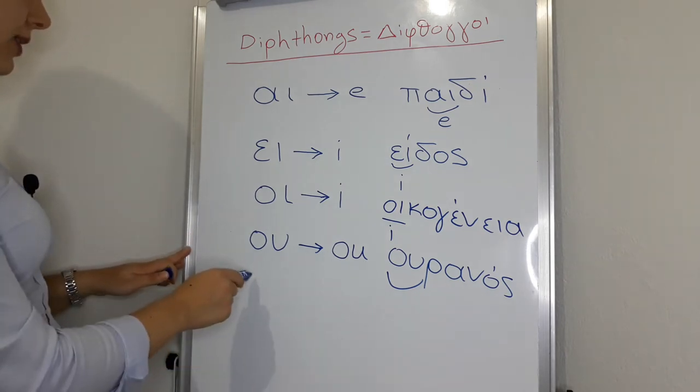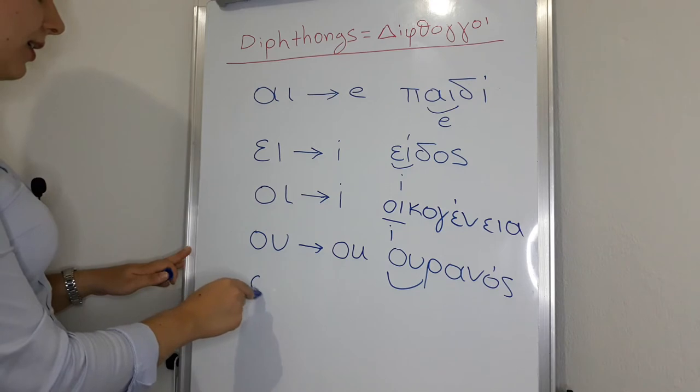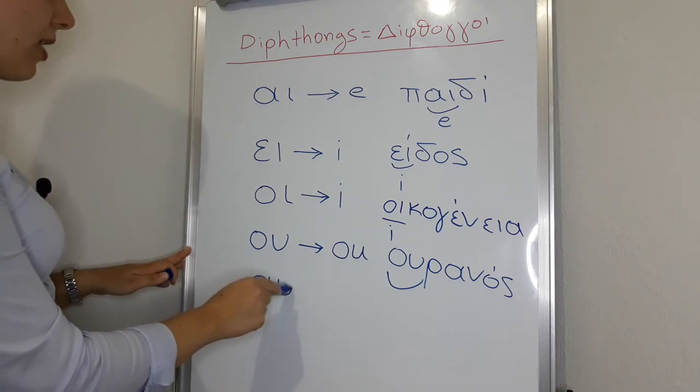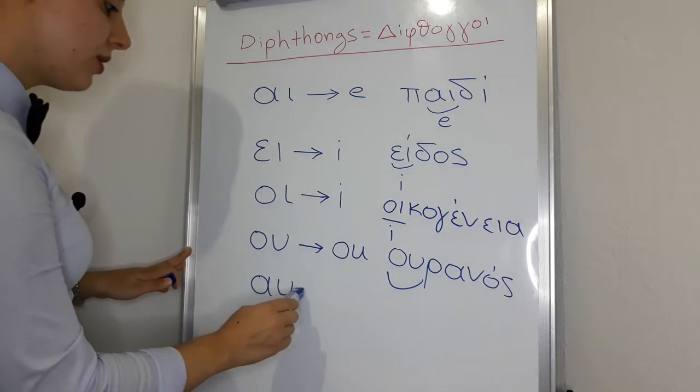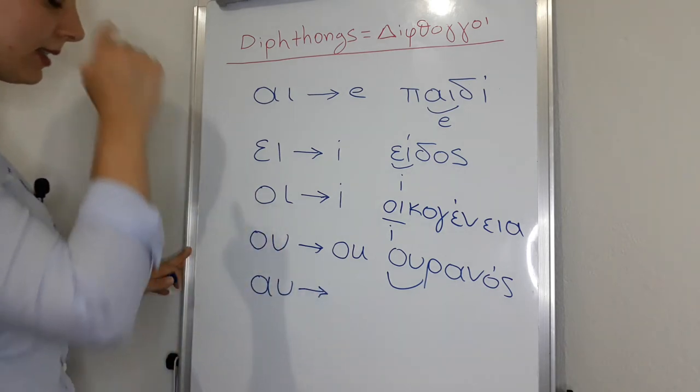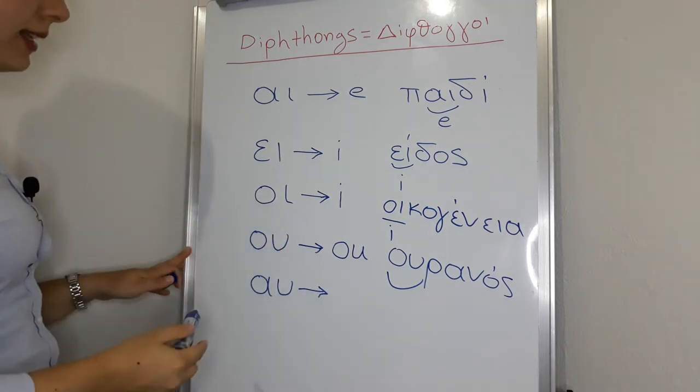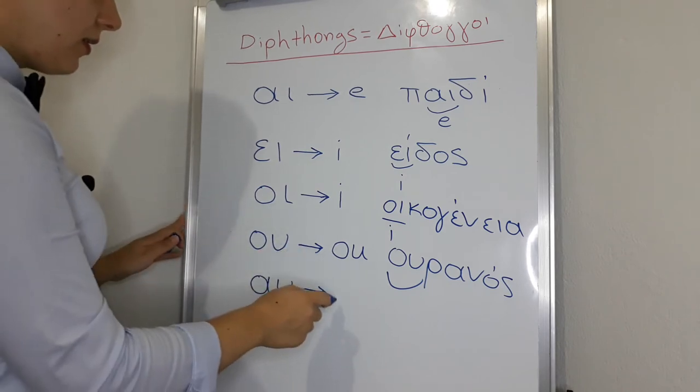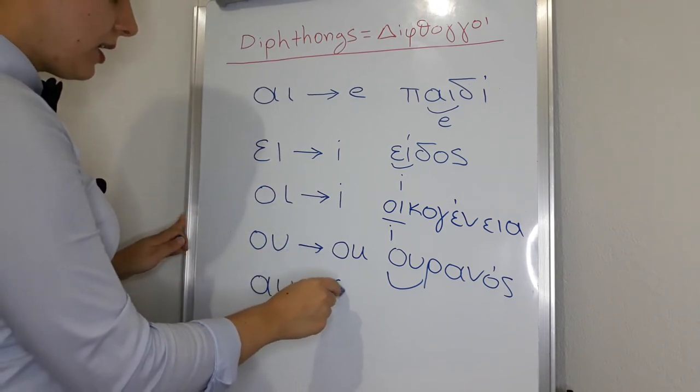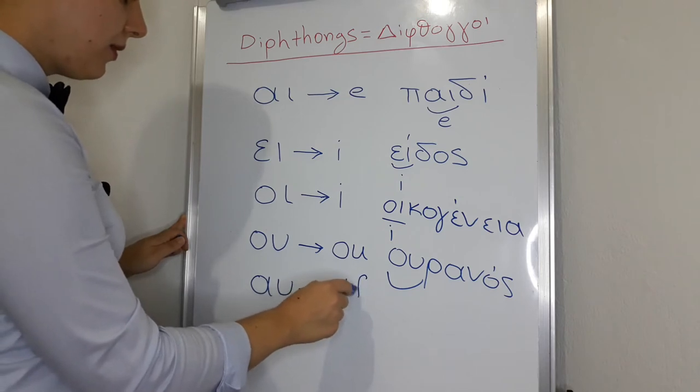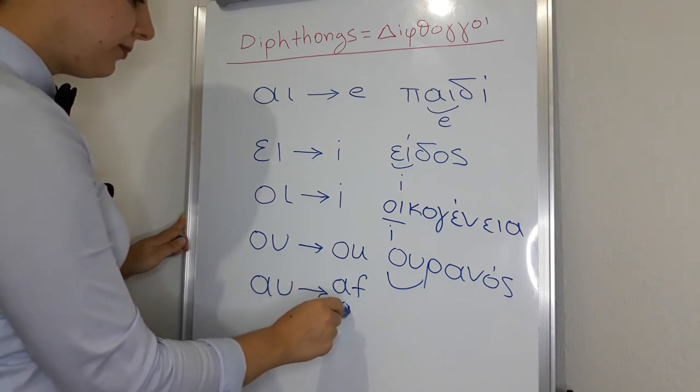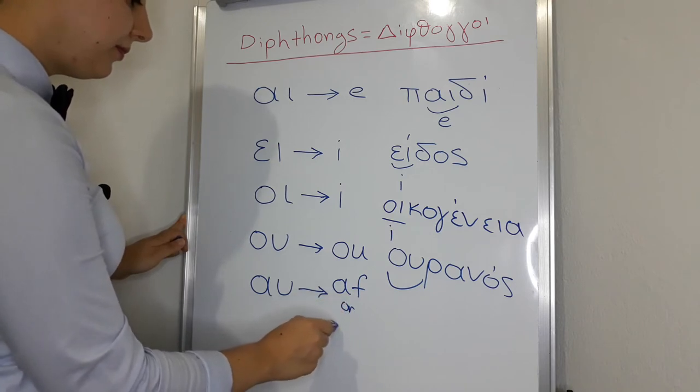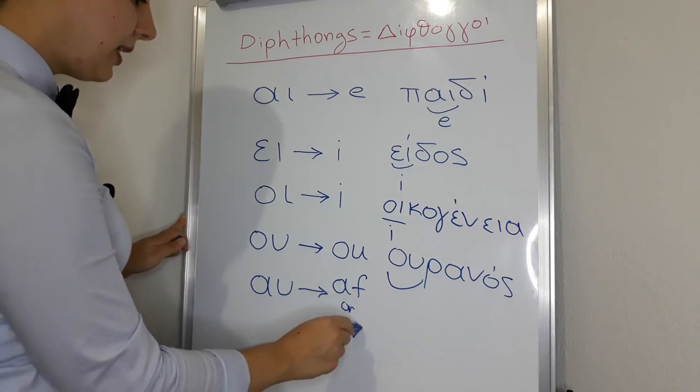Next one is the diphthong u, or u av. This one has two pronunciations. It depends on what word is in. Av, or, av.